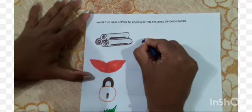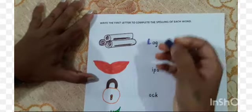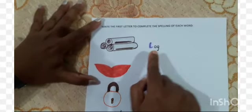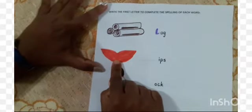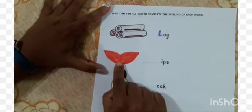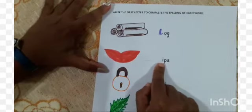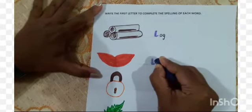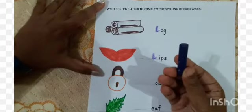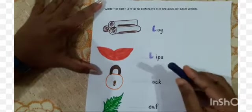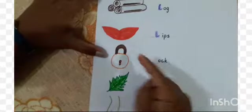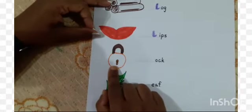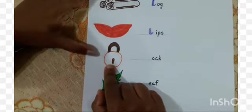L-lips, L-lips. So you need to write the small letter L. You can use a crayon or chalk. L-lock, L-lock. This is a picture of a lock, so you need to write the small letter L.